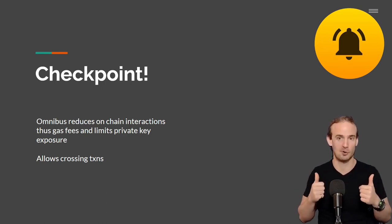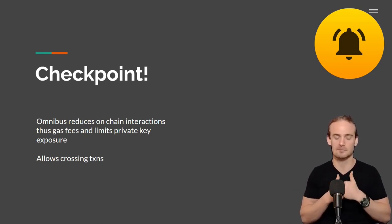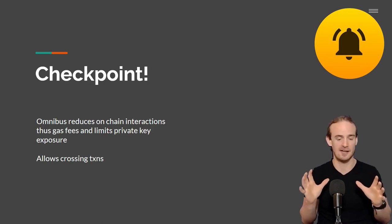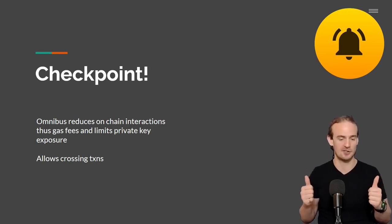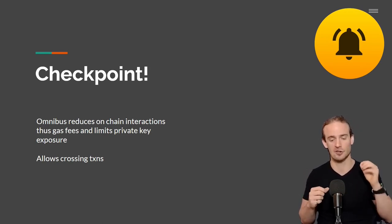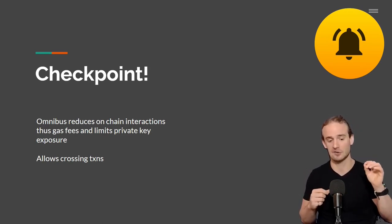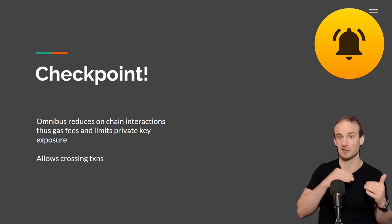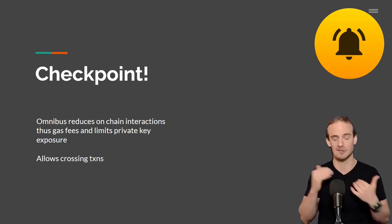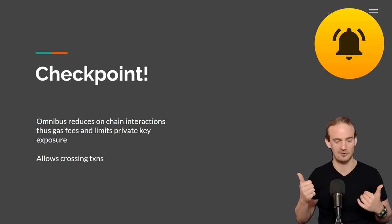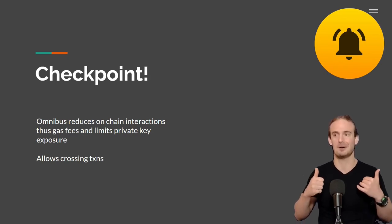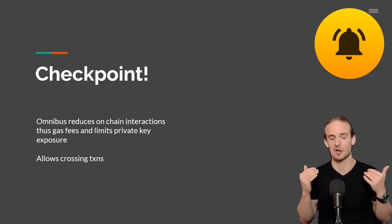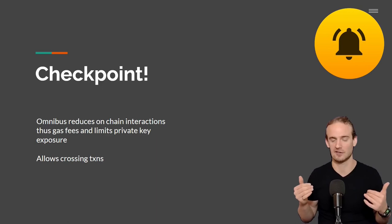Checkpoint before we move on: if you want to stop this video now you can. Essentially, Omnibus models reduce on-chain interactions, thus reducing the number of times we have to go online and make transactions. They reduce gas fees, allow us to consolidate private keys, and allow crossing transactions.